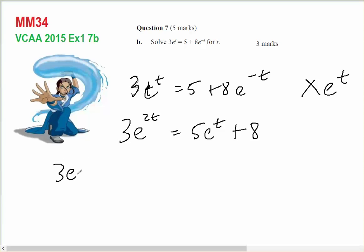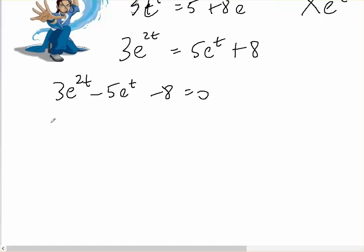We've got 3e^(2t) - 5e^t - 8 = 0. And if I make e^t equal a, I've got 3a² - 5a - 8 = 0.